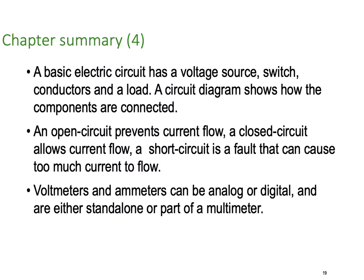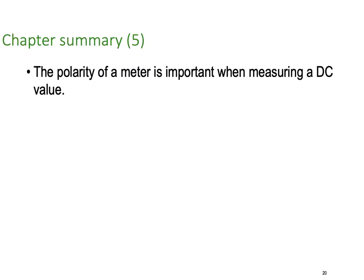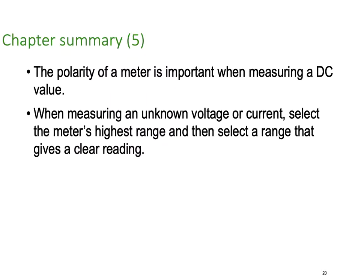Voltmeters and ammeters can be either analog or digital and are either standalone or part of a multimeter. The polarity of a meter is important when measuring a DC value. When measuring an unknown voltage or current, select a meter's highest possible range, then select a range that gives a clear reading.